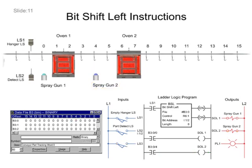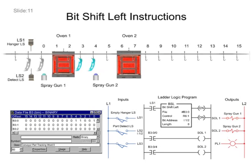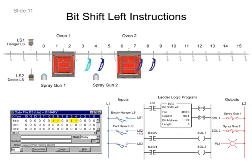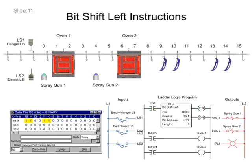The bit shift left instruction is further illustrated by loading the conveyor in varying batch sizes. Adding two parts loads a pair of logic 1s into the array as they trigger LS1 and LS2 simultaneously.